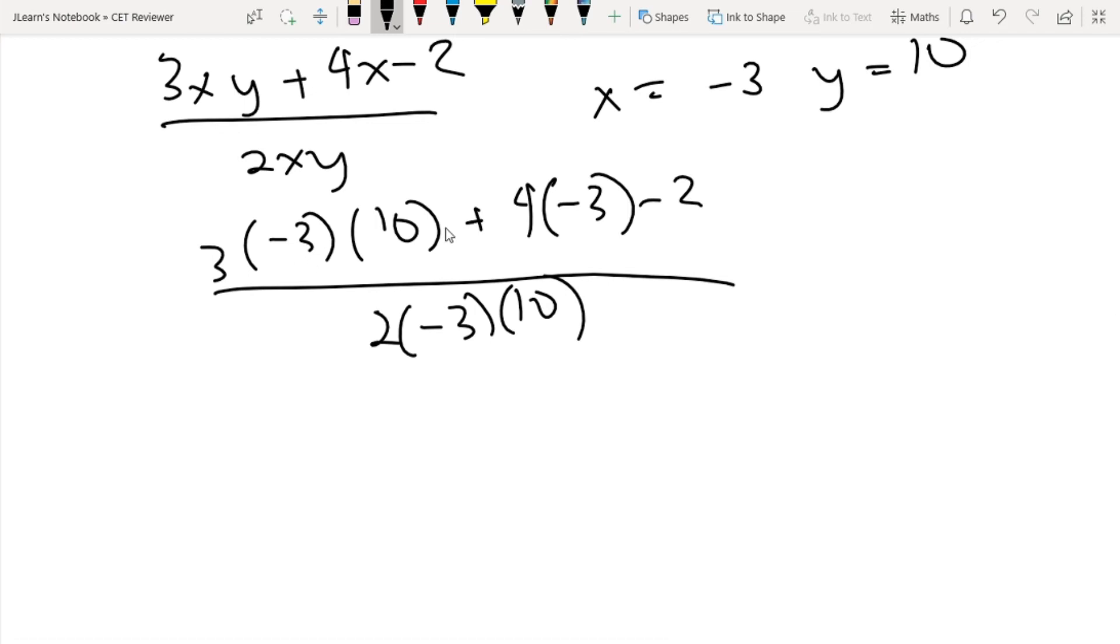Let's evaluate this: 3 times -3 times 10 is -90, 4 times -3 is -12, minus 2, all over 2 times -3 times 10 which is -60. If you evaluate this, it equals -104 over -60.